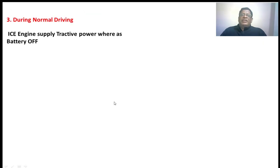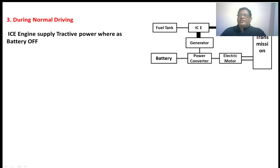Normal drive. Generally in normal driving, the vehicle does not require that much power, so the IC engine is dominated. The IC engine only supplies tractive power, whereas the battery will be in off condition. The fuel tank and IC engine give tractive power to the vehicle, whereas the battery will not supply any power — that is why no arrow is shown here.